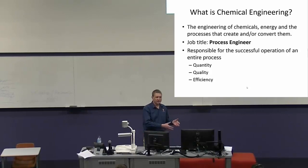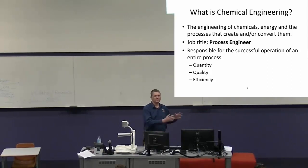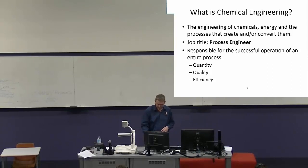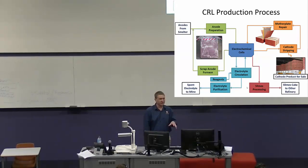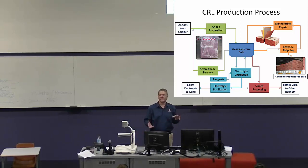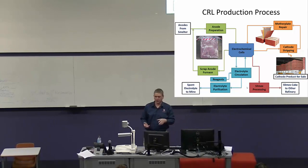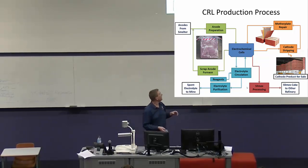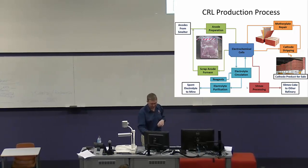For instance, those processes might be the extraction of gas from the ground, the conversion of oil to petroleum products, or the extraction of dirt and turning that into a metal like iron, nickel, or in my case, copper. The production process I'm in charge of is at the copper refinery just down the road here in Townsville. What we do is turn copper anodes — which are 99.7% copper — into 99.9999% copper, because very pure copper is needed for electronic circuits, copper piping, or making brass.